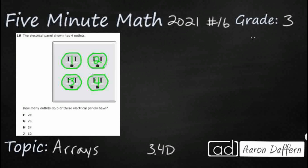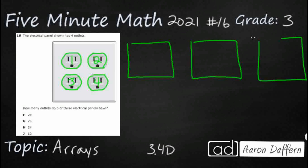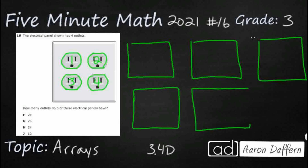And then, how many outlets do six of these electrical panels have? So we need to make an array, and we need to basically just draw five more of these electrical panels. I'm only drawing five more because I've already got one right here — this is my first one.